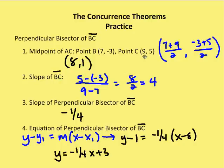Now we find the slope of BC: change in y values is 5 - (-3) = 8, over 9 - 7 = 2, giving a slope of 4. The slope of the perpendicular bisector of BC is the opposite reciprocal of 4, which is -1/4. Using point-slope form, y - 1 = -1/4(x - 8), and solving for y gives us y = -1/4x + 3.